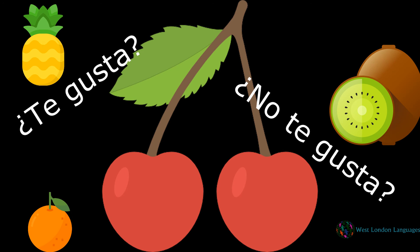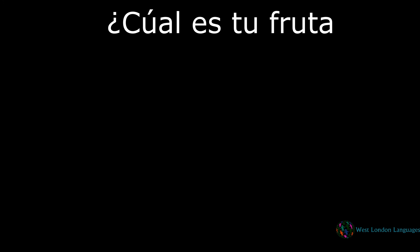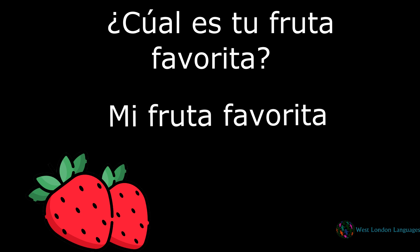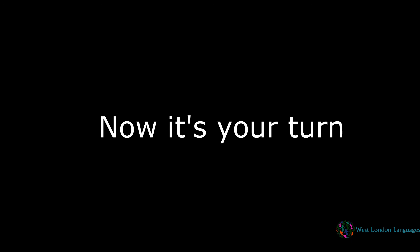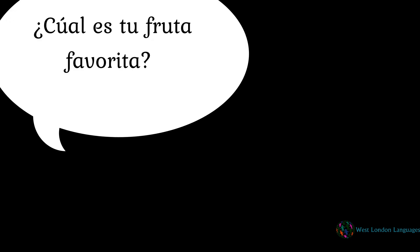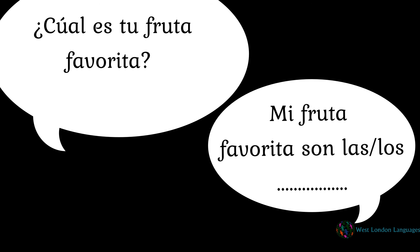Let's learn how to ask somebody what their favourite fruit is. Just like in English we say 'my favourite fruit are apples', we also use the plural in Spanish. So instead of saying es la manzana, we would say son las manzanas. To ask: ¿cuál es tu fruta favorita? And to reply: mi fruta favorita son las fresas. Now it's your turn — try asking ¿cuál es tu fruta favorita? and replying with mi fruta favorita son las or los, and then the name of the fruit.